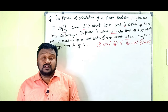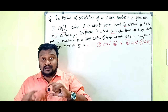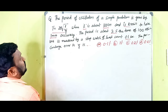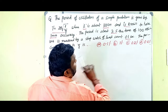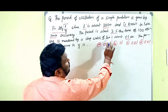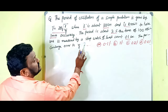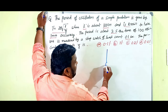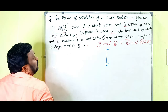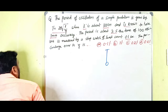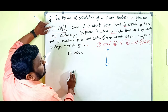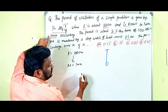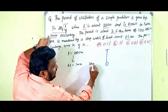See the next question — this is an important model. The period of oscillation of a simple pendulum is given by T = 2π√(L/g), where L is about 100 centimeters and known to have 1 millimeter accuracy. The period is about 2 seconds. The time of 100 oscillations is measured by a stopwatch with least count 0.1 second.